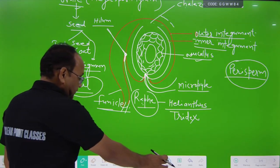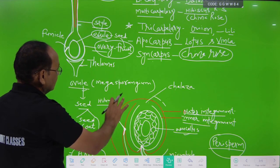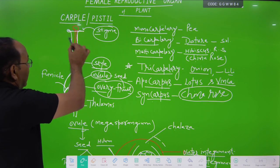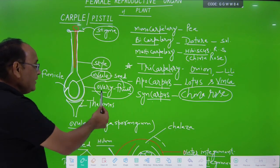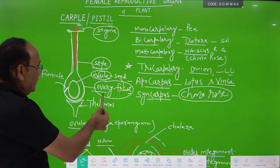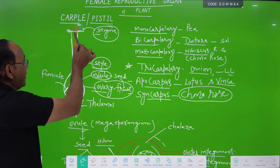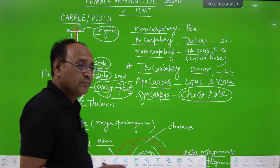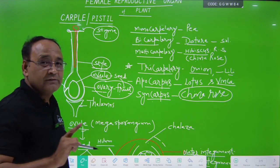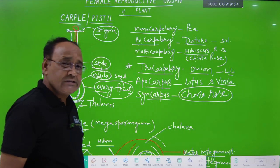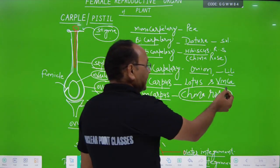It is the carpal or pistil, which contains mainly three parts: ovary, style, and stigma. Ovary converts into fruit after fertilization; ovule present inside the ovary converts into seed after fertilization. Style gives the passage to the pollen tube, and stigma receives the pollen grain during pollination. Monocarpillary — single carpel; bicarpillary — two carpels; multicarpillary — more than three; tricarpillary — three. Apocarpus: carpels are separated and not united — found in lotus or Vinca. Syncarpus: all carpels are attached and united.